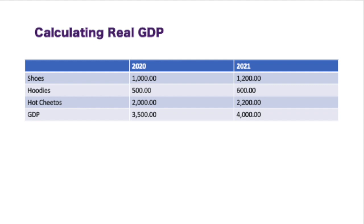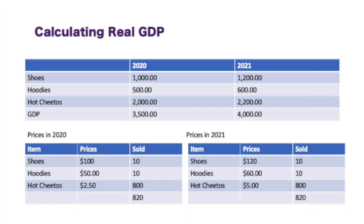However, let's look at the prices first and see if there's actual economic growth — are we producing more? The prices for shoes is $100, for hoodies is $50, and for hot Cheetos are $2.50. You can see that 820 items were sold in 2020. In 2021, 10 shoes were sold, 10 hoodies were sold, and 800 Cheetos were sold — again, 820 items were sold. So there is no growth here; the only thing that happened is prices increased. Due to inflation, we're not able to interpret if there's economic growth.